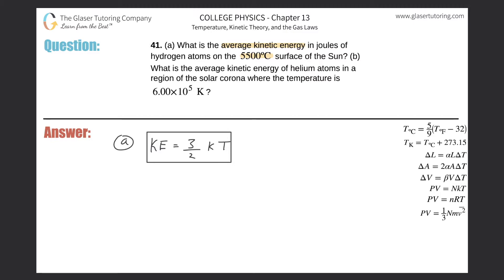So now all I need to do is just plug in the values. This is very straightforward. So kinetic energy will be equal to 3 halves multiplied by that Boltzmann constant of 1.38 times 10 to the minus 23, multiplied by the temperature. Remember, temperature has to be in Kelvin, so I have to take the 5,500 degrees Celsius and add 273 to it.